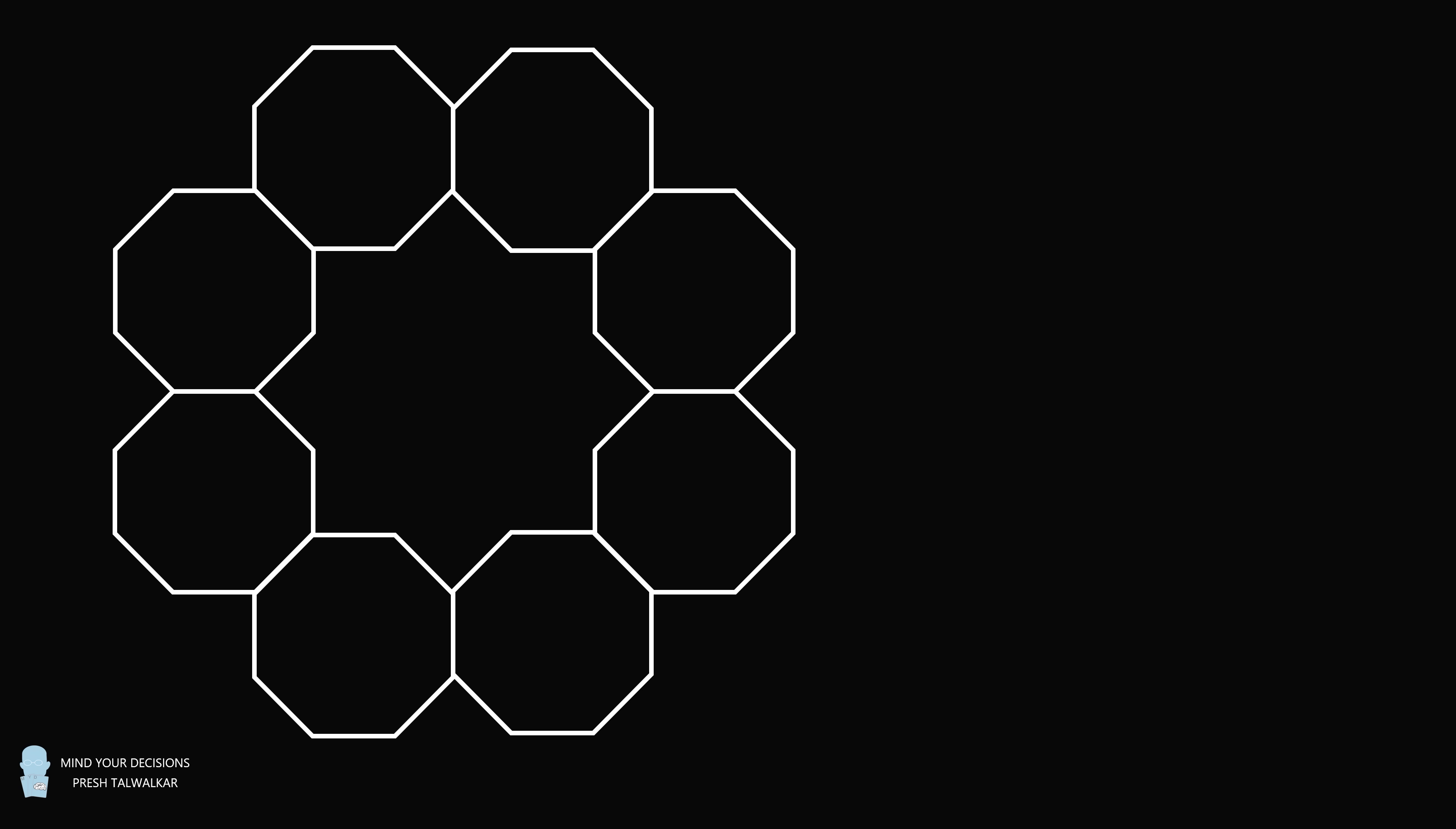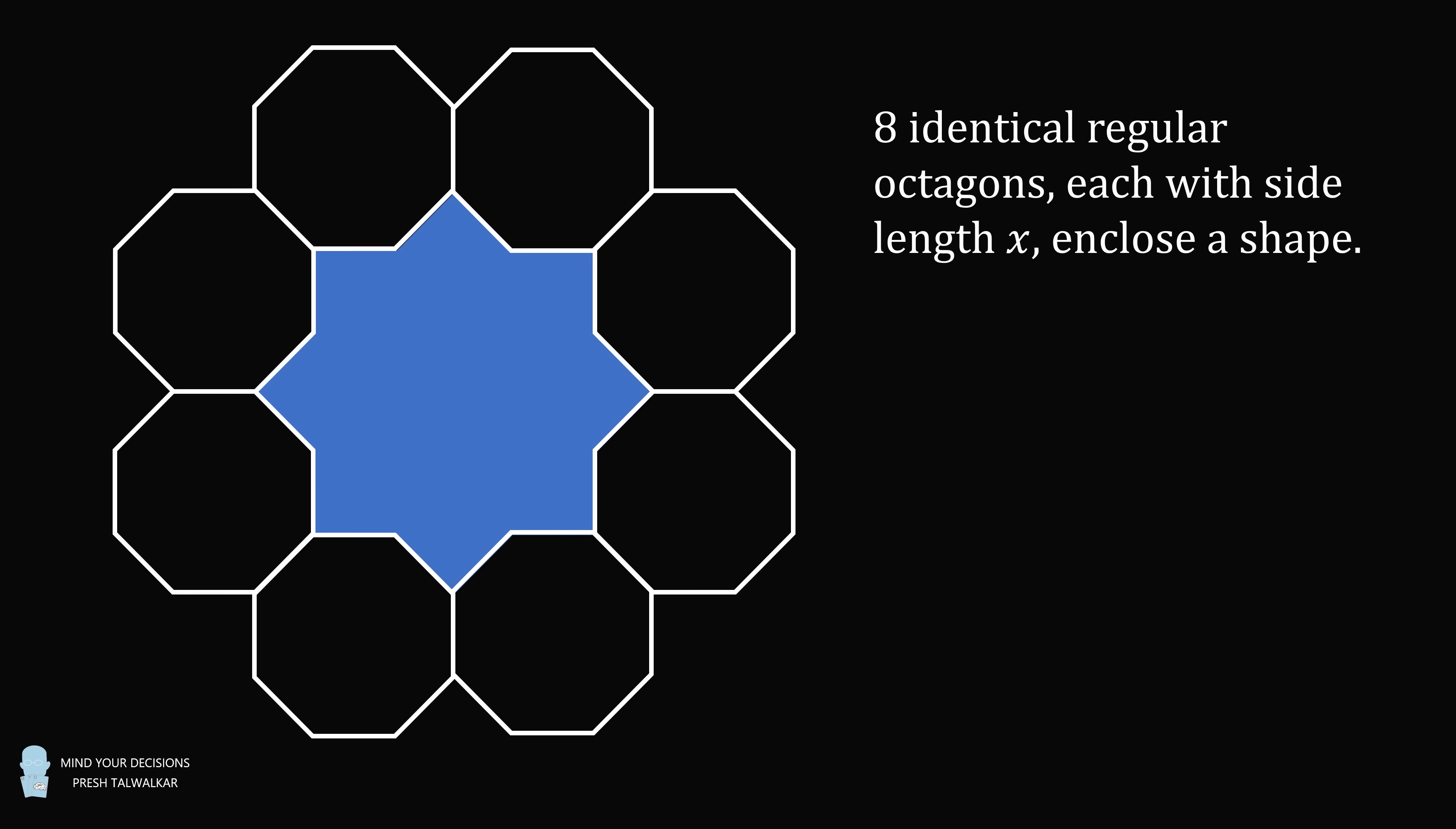Here's the diagram. Eight identical regular octagons, each with side length x, enclose a shape. What is the area of the enclosed shape? Write your answer in the form p multiplied by the term 2 plus root 2 multiplied by x squared, where p is an integer.